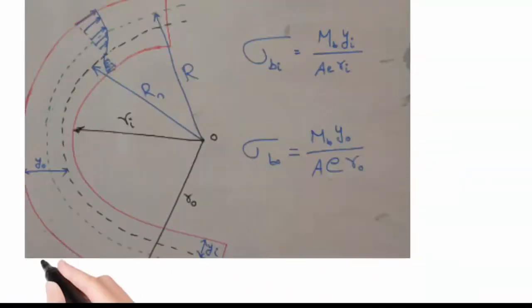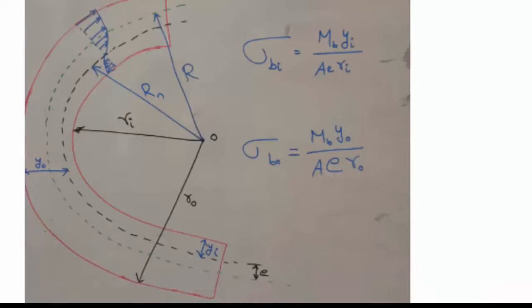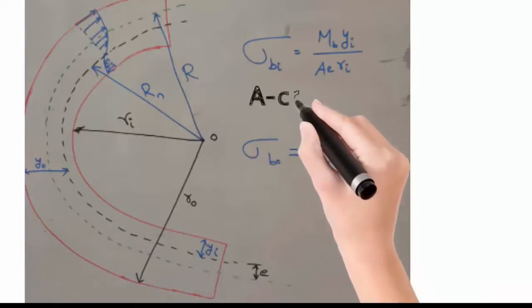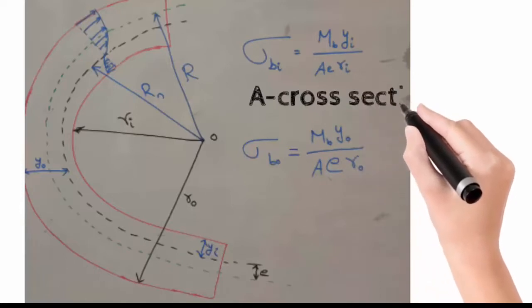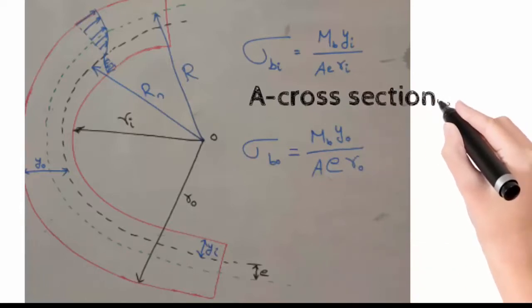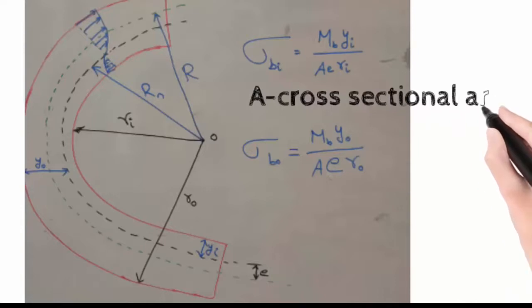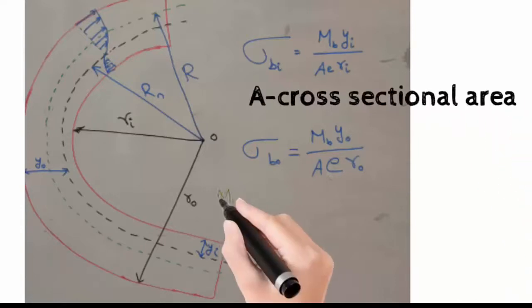The stresses at the fibers are found using the formulas: Sigma Bi equals M times Yi divided by A times e times Ri, and Sigma B0 equals M times Yi divided by A times e times R0. Where M is the bending moment and A is the cross-sectional area. Other values have already been discussed.